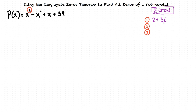We can find our second zero using the conjugate zeros theorem, which tells us that since 2 plus 3i is a zero of p of x, its conjugate is also a zero. The conjugate of 2 plus 3i is 2 minus 3i. So now we have two out of our three zeros: 2 plus 3i and 2 minus 3i.